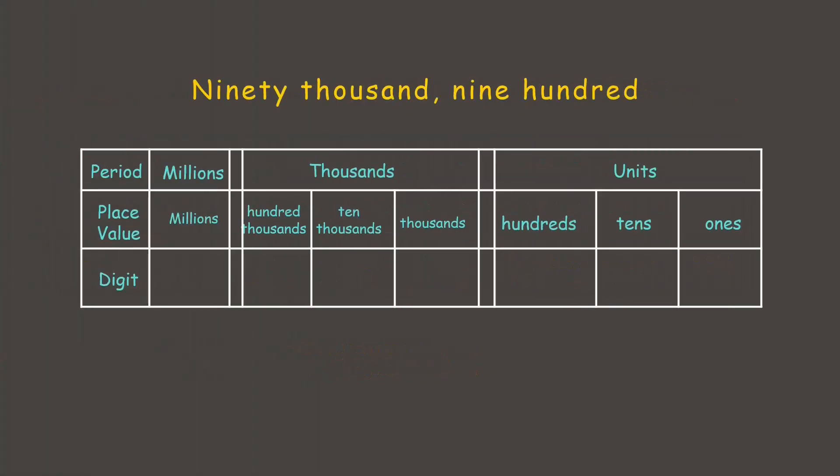Let's go to the next one. So here we have 90 thousand, so 90 under the thousands period, and 900 under the units period. Again, don't forget to place the comma to separate each period. Now we have here 90,900.